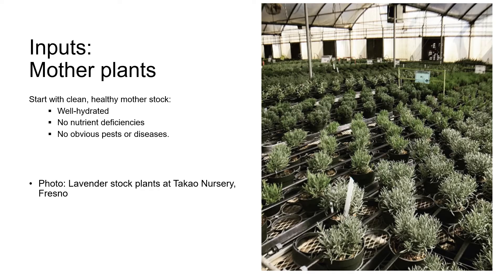We should try to collect cutting material from stems that are at least two feet above the ground if possible. This also applies to seed collection. The reason is that water droplets from overhead irrigation or rain can bounce back up from the ground onto the foliage of plants carrying soil-borne pathogens with them. Normally water droplets don't bounce any higher than two feet.